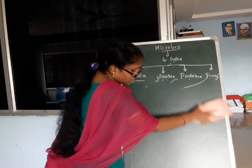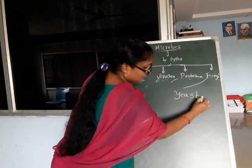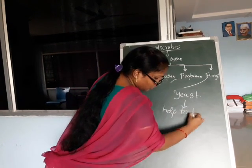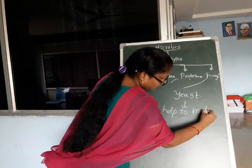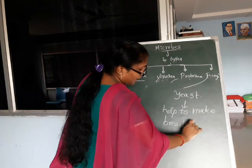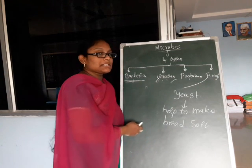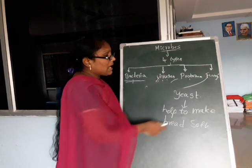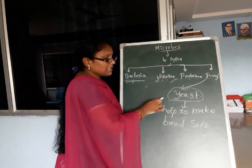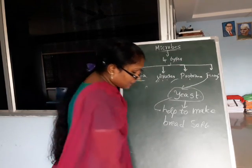However, some fungi are called yeast. This yeast helps to make bread soft. Fungi grow in decaying matter, cause skin diseases like ringworm and athlete's foot, and some fungi called yeast help to make bread soft.